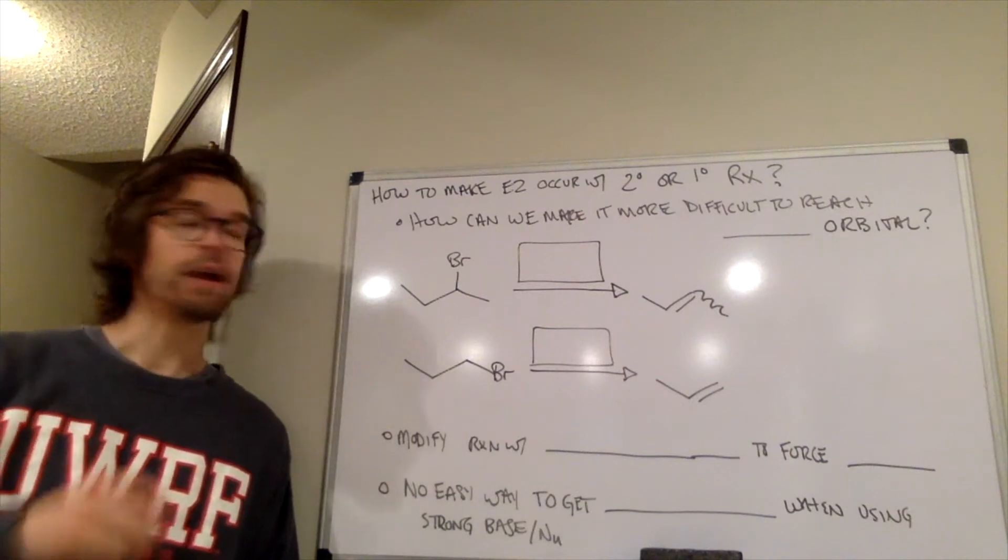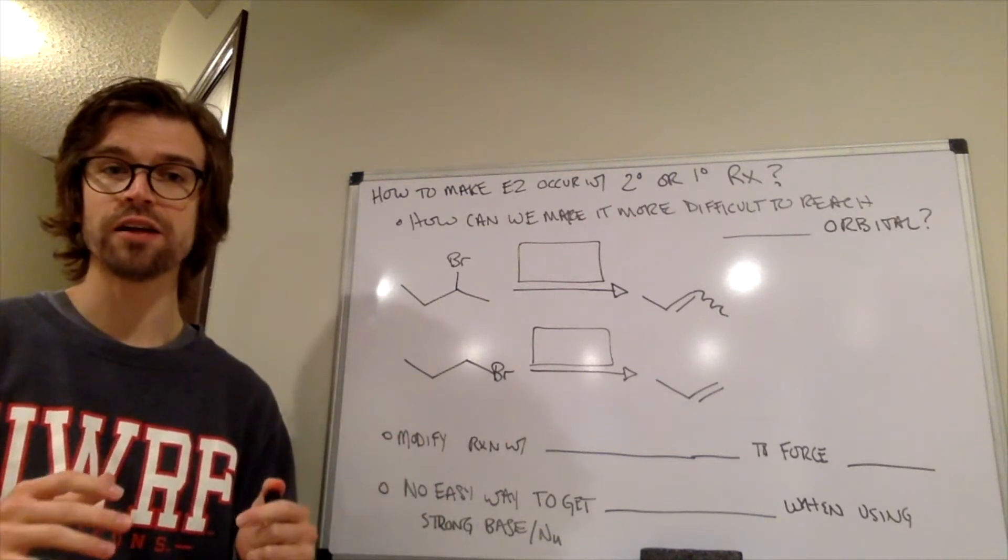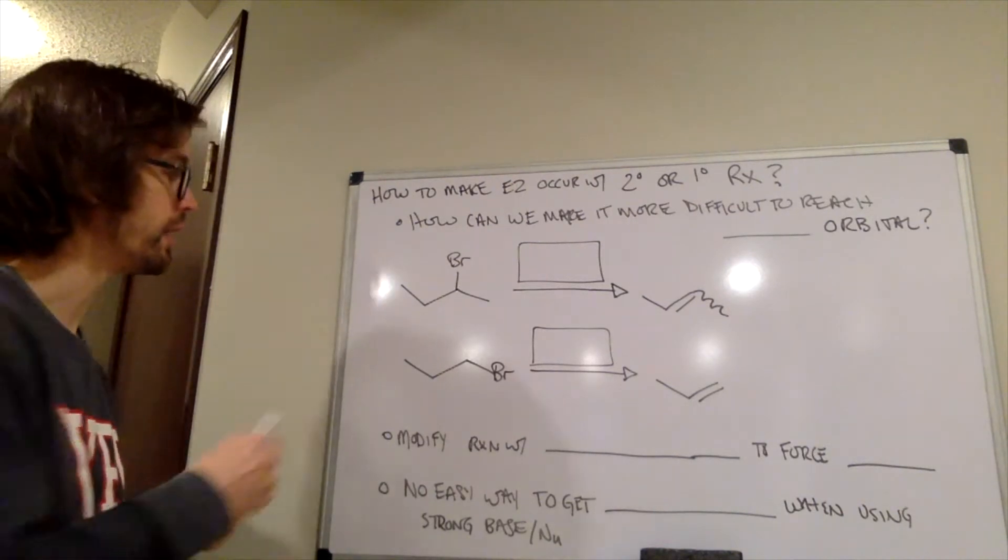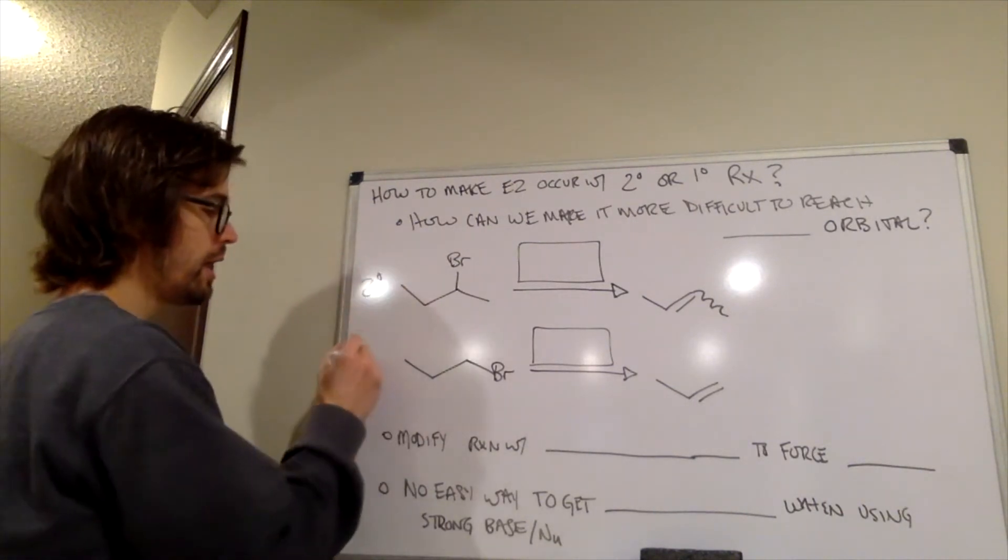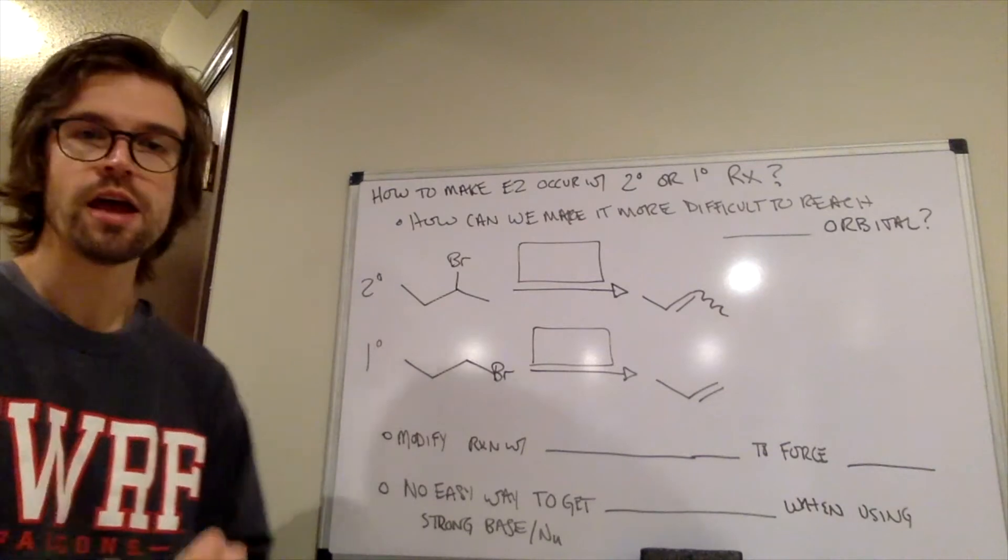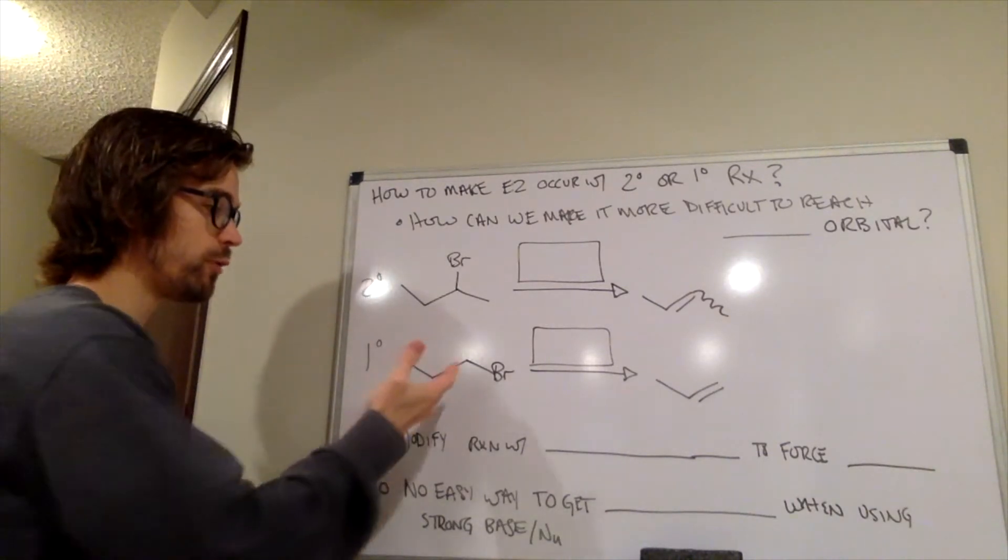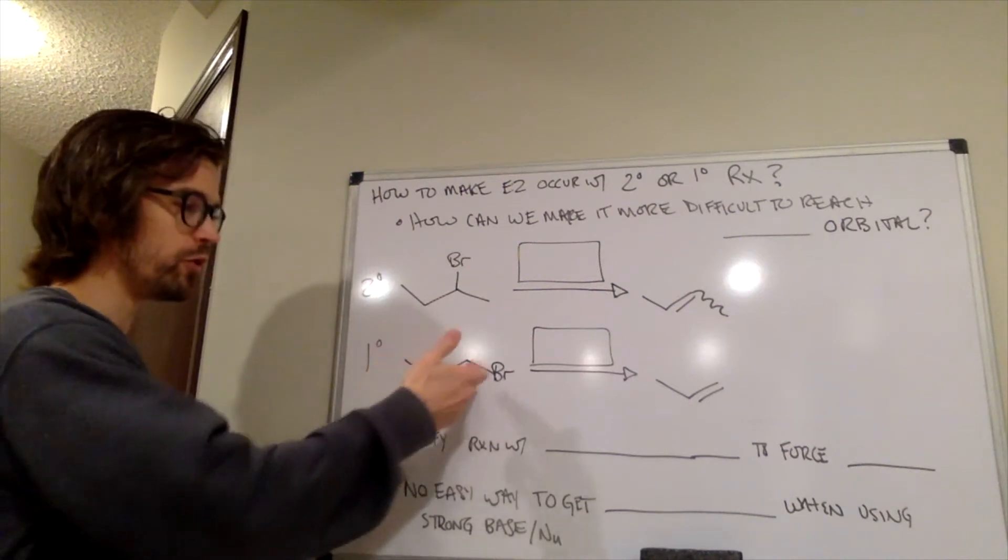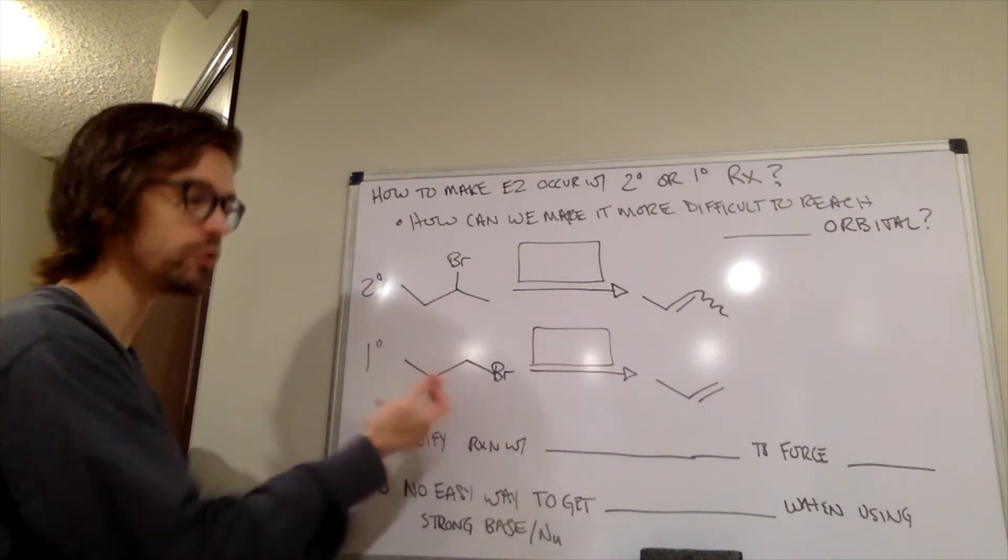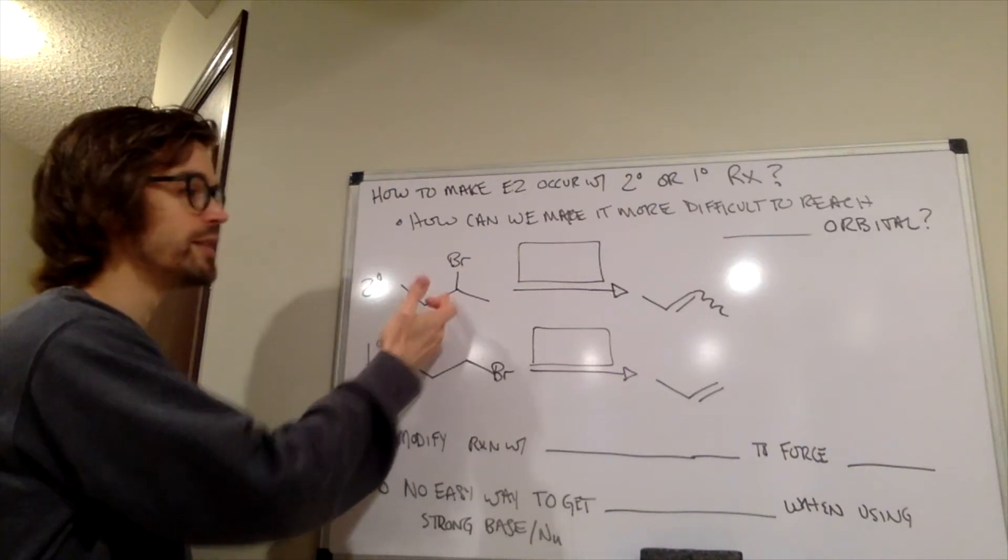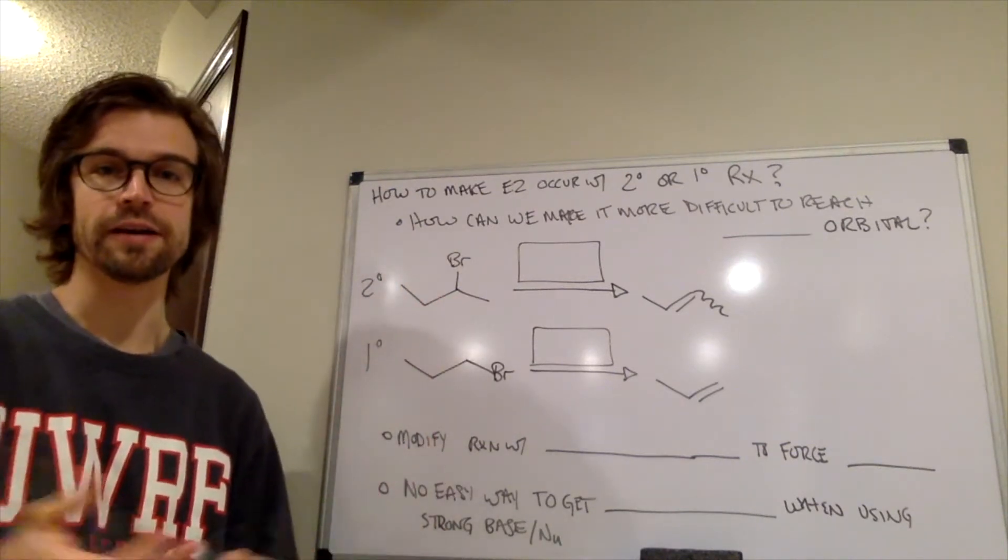But what it does was entirely dependent on the identity of the alkyl halide. Here we have a secondary alkyl halide and a primary alkyl halide, and with a base like OH-, that is going to force this situation. If we treated with OH-, it would do exclusively SN2, and if it was OH-, we would get a mixture of SN2 and E2 with the secondary alkyl halide.